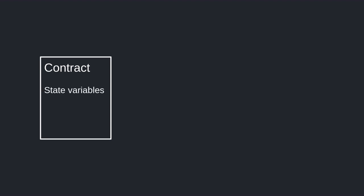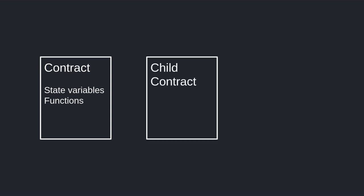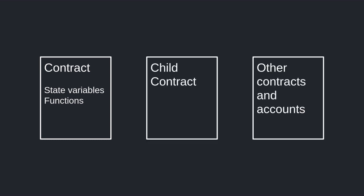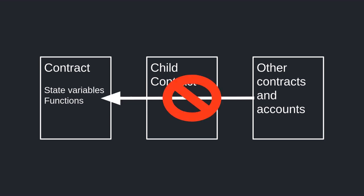Let's say that a contract has some state variables and functions. In Solidity, you have to declare whether a child contract, other contracts, or accounts have access to these state variables and functions.